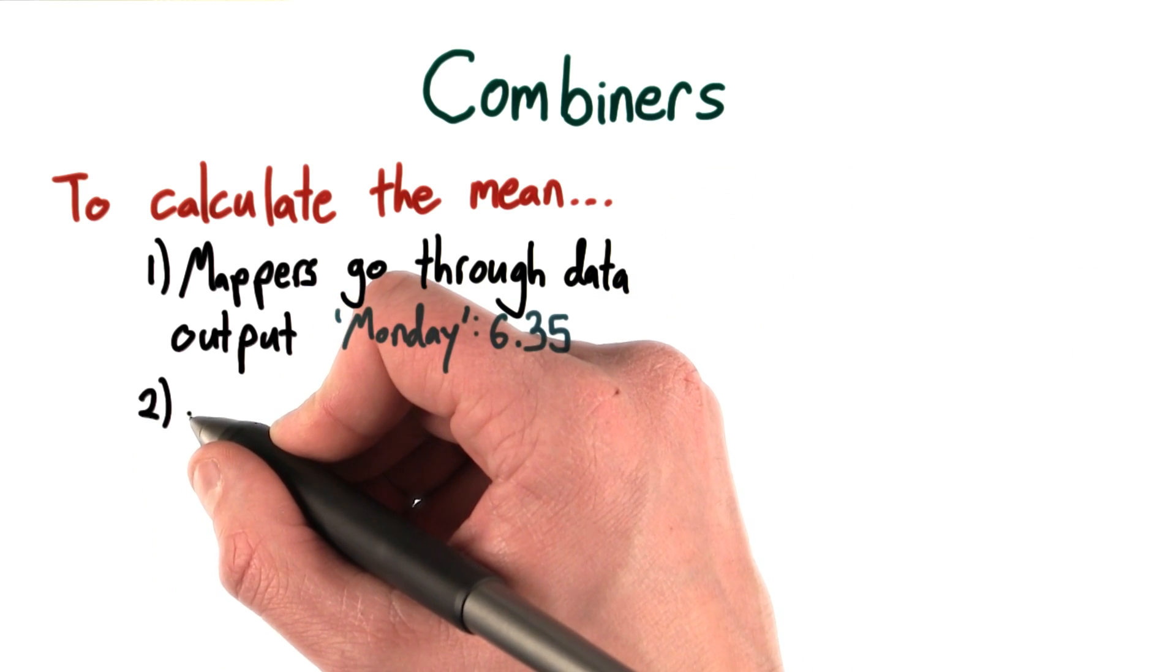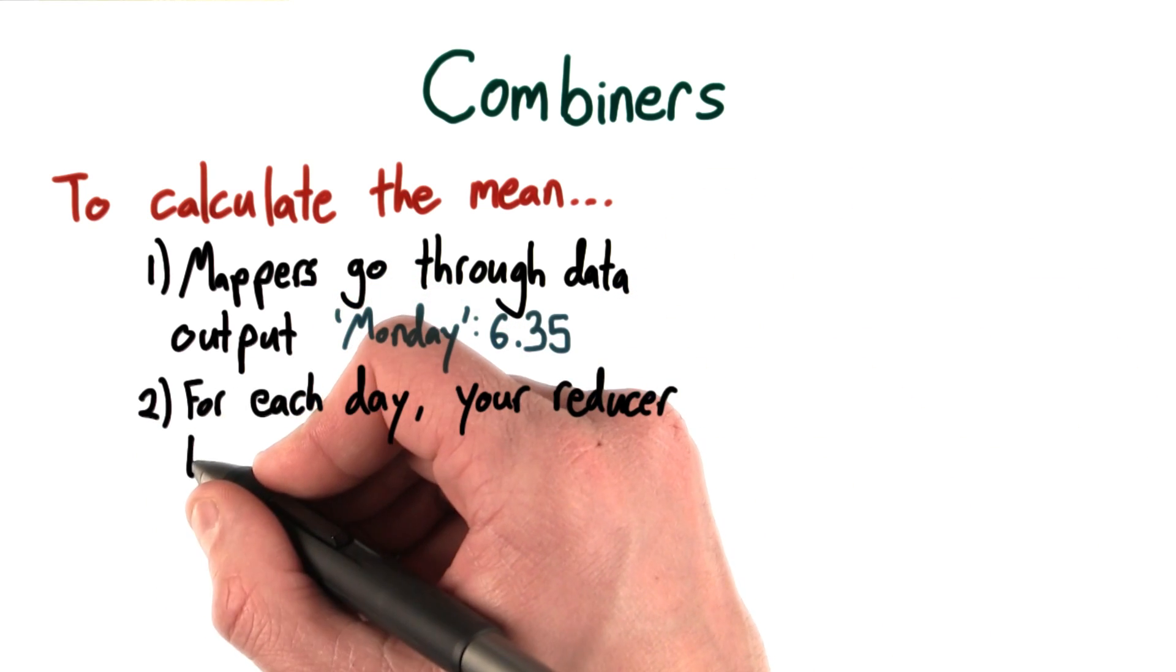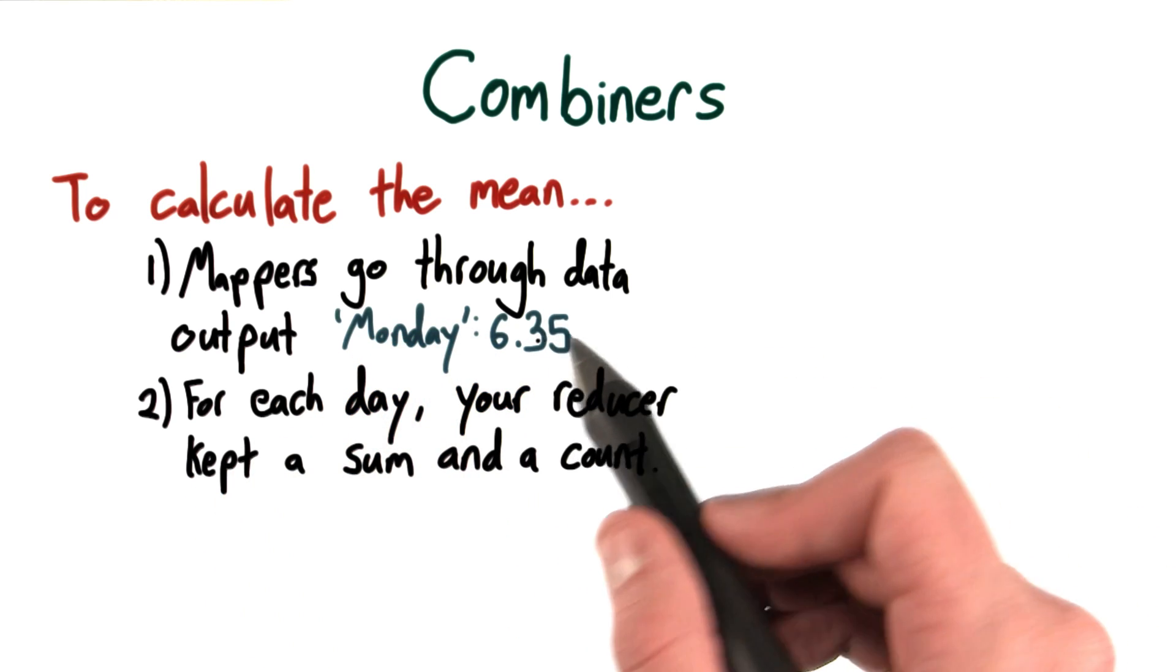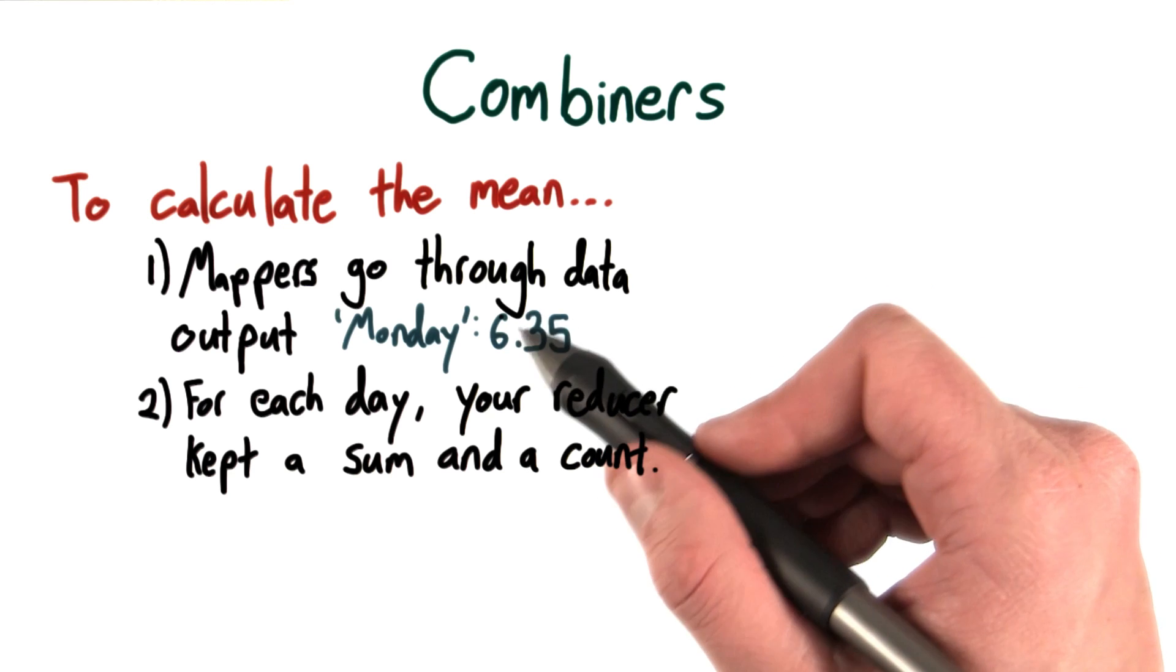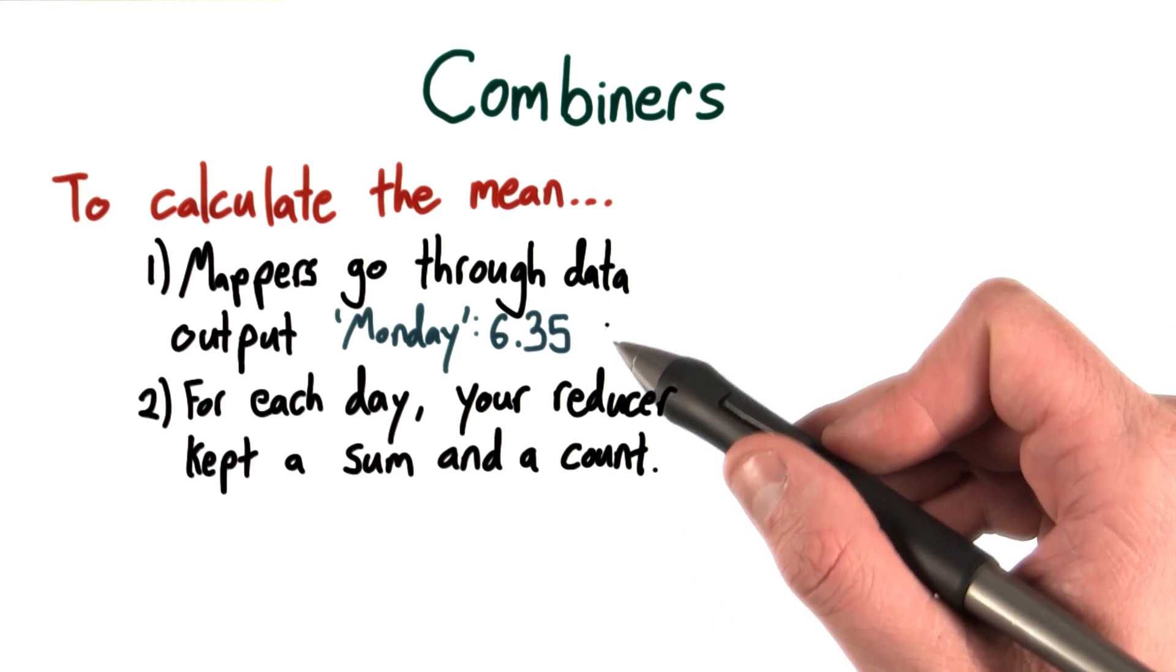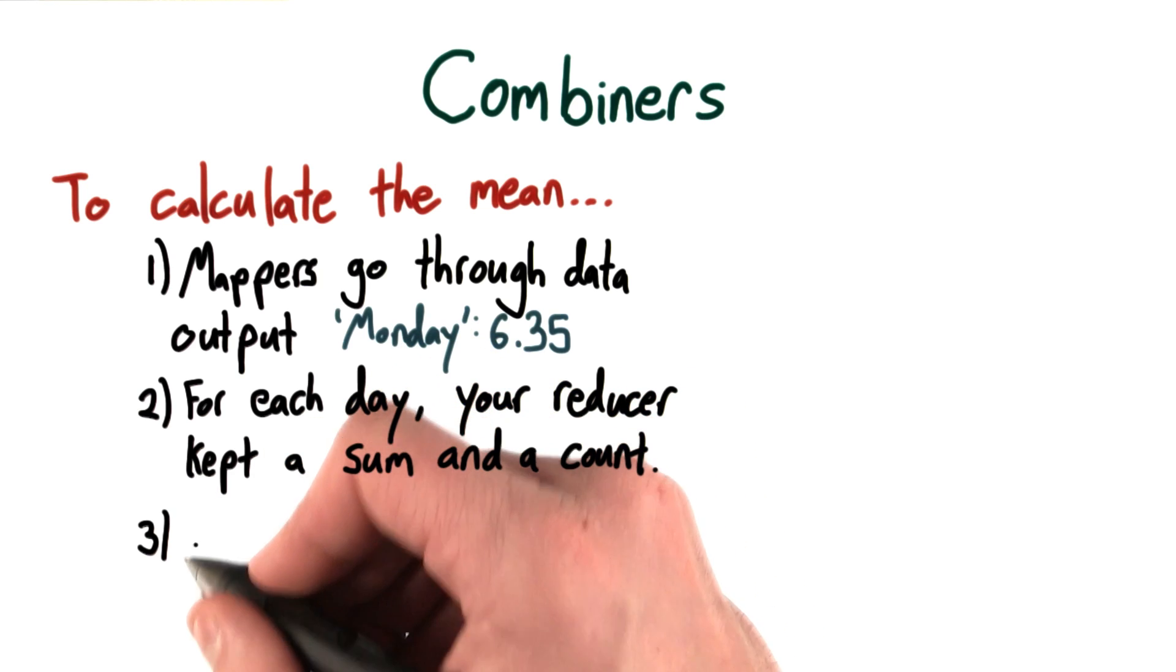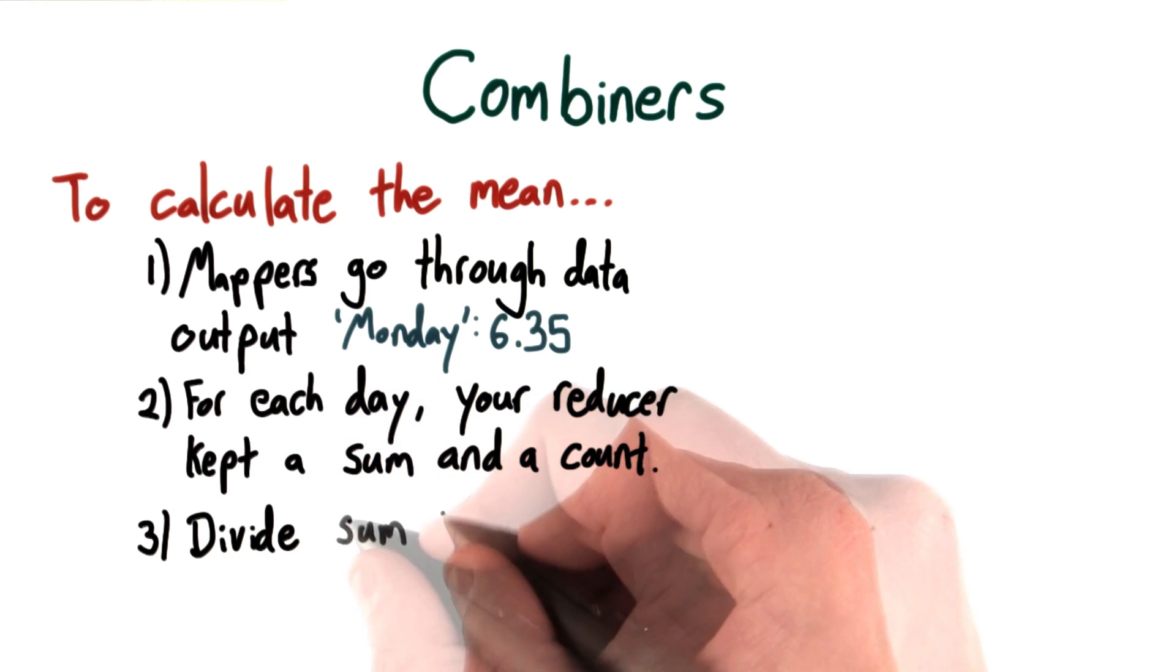Then, for each day of the week, your reducer probably kept a total of the sum and a count. So maybe your value here was the amount of money spent and also a 1 to help increment the count. And then you probably would divide the sum by the count.